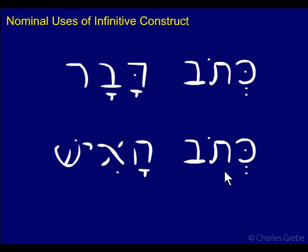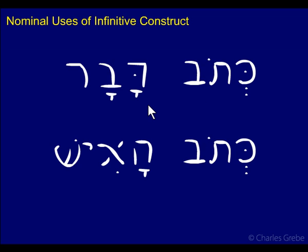So sometimes you can tell the difference — whether a noun is a subject or an object — simply by the nature of the word itself. It'll be obvious when you're translating in a sentence; you'll naturally fall to one or the other based on the meaning. Notice how we translate them differently: here we translate the infinitive construct as 'to write a word,' and here as 'the man's writing.' Sometimes an infinitive construct will be translated with 'to,' and another common option is the word itself with an '-ing' ending.